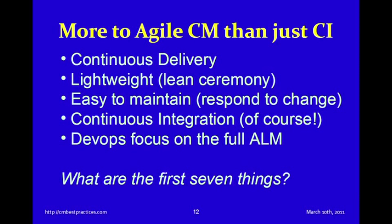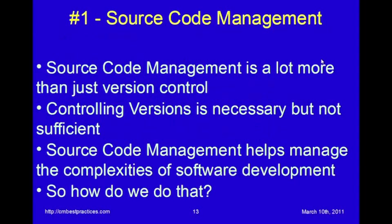What are the first seven things we want to consider? First and foremost is source code management. Before you go off smugly saying you've already got this nailed, I'm going to challenge you — in a lot of environments I go into, they are really short-changing source code management and not putting enough emphasis on what it's really all about. Controlling versions is necessary, but it's not sufficient. There's a lot more to source code management than just version control, and if done well, it helps manage the complexities of the software development environment.